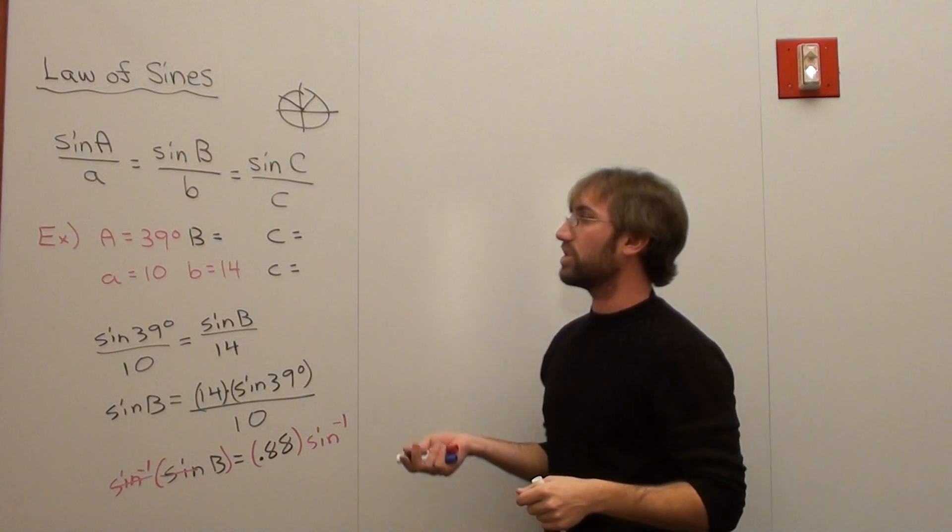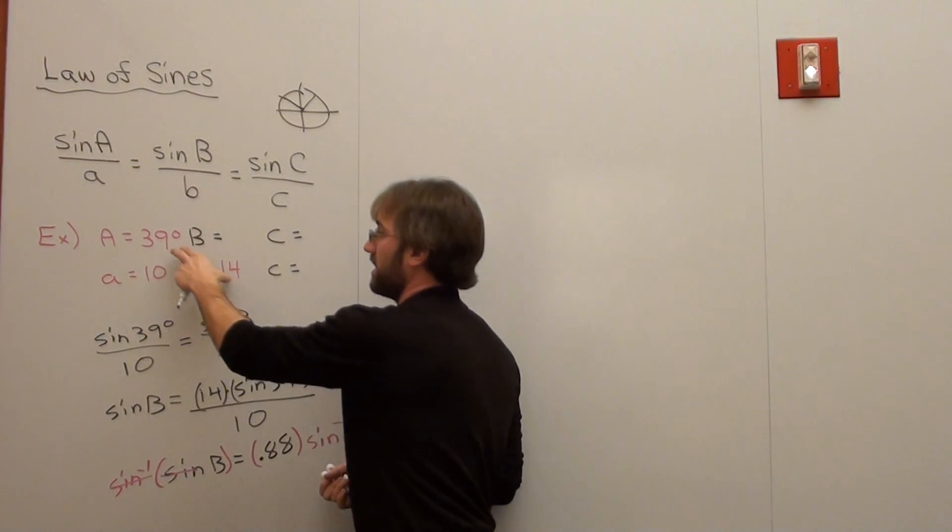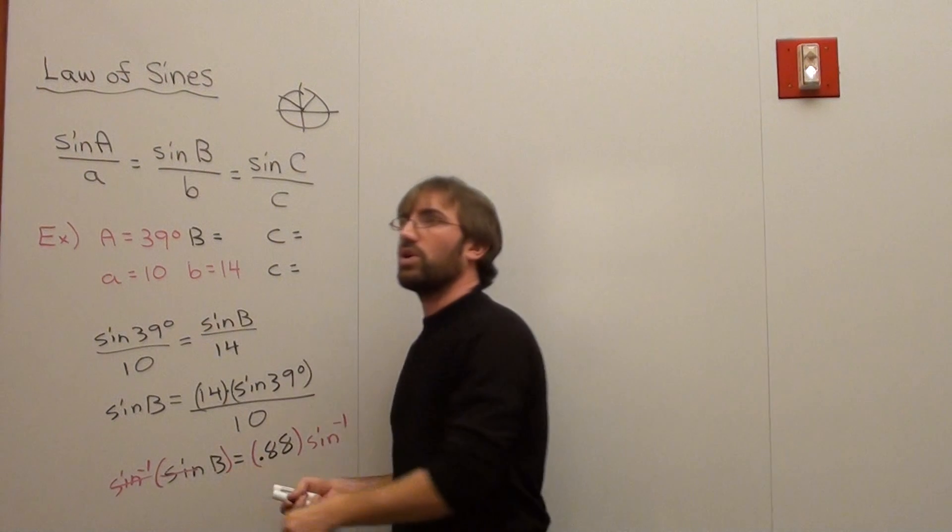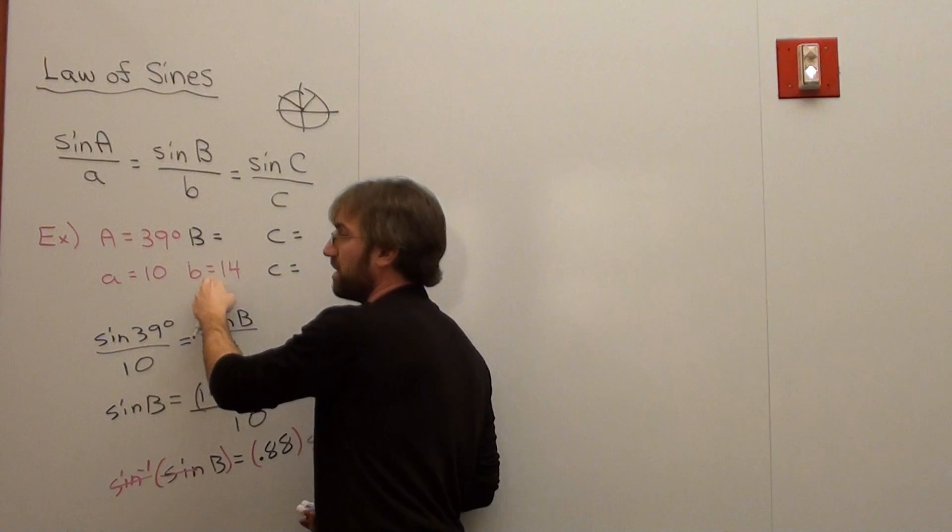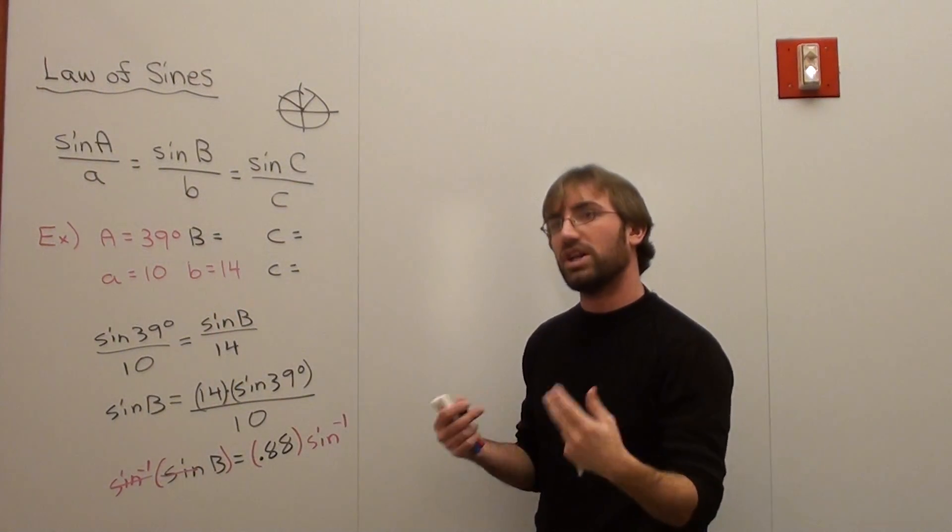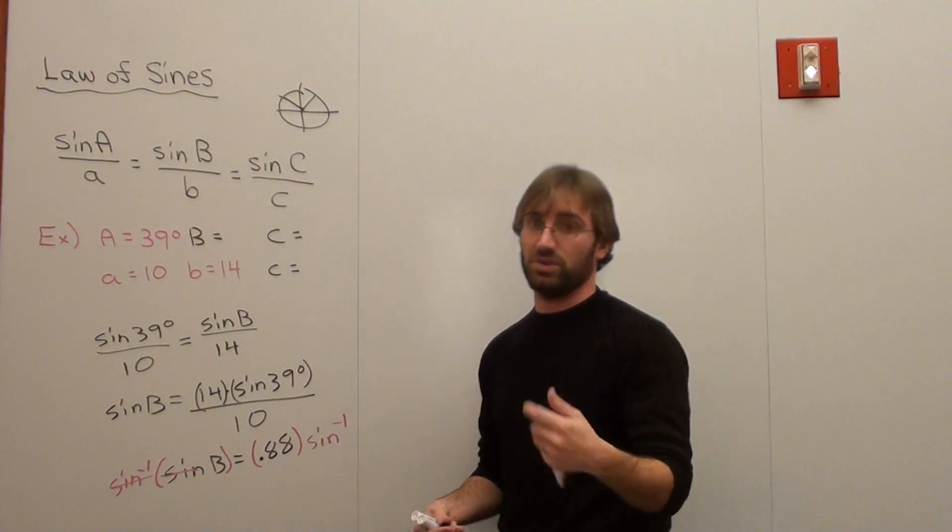That's something you have to watch out for when using the law of sines, because you can have a no solution case when this is bigger than A, or a two solution case when this is smaller than A but B is bigger than A. Always watch out for that when you do the law of sines.